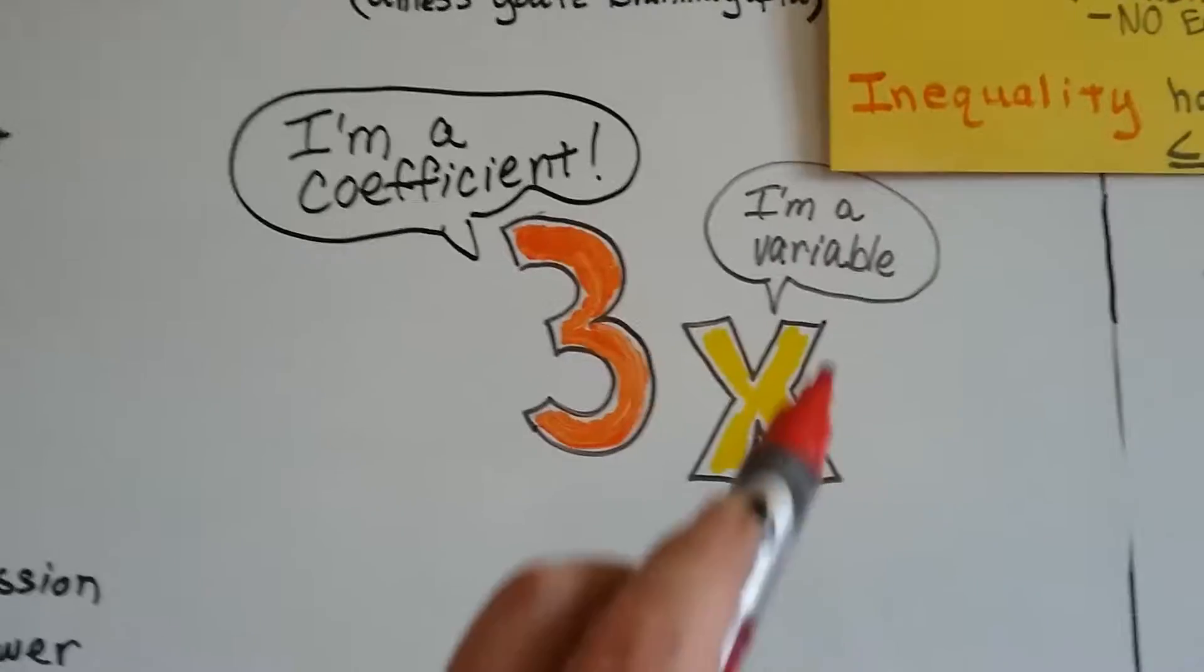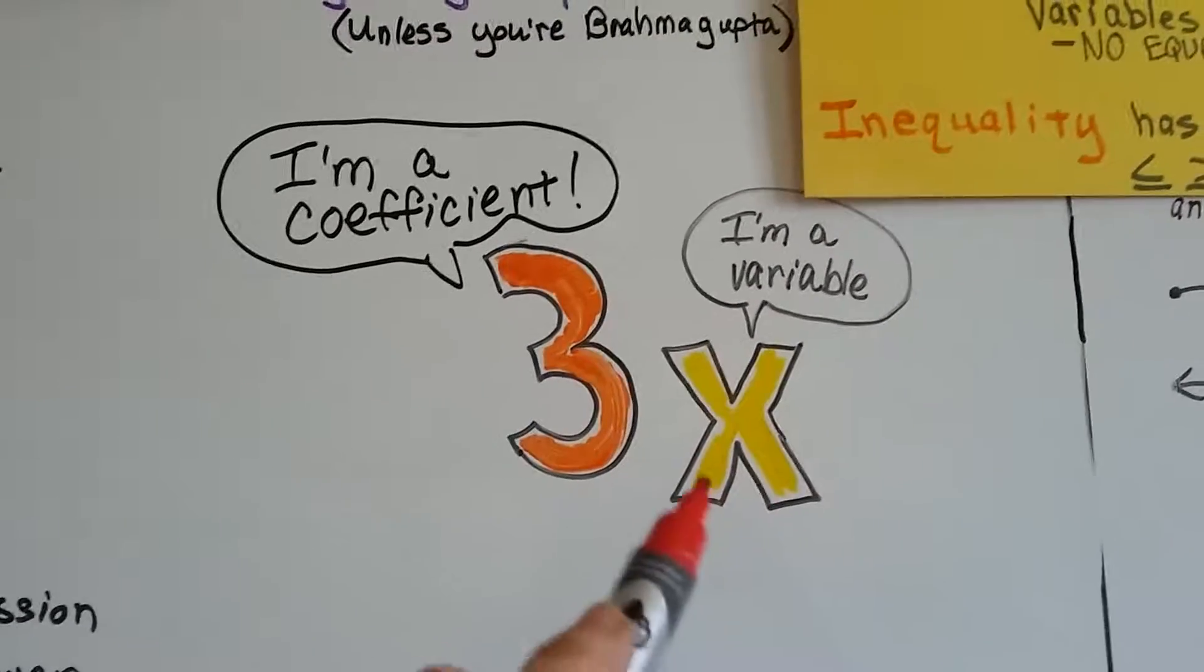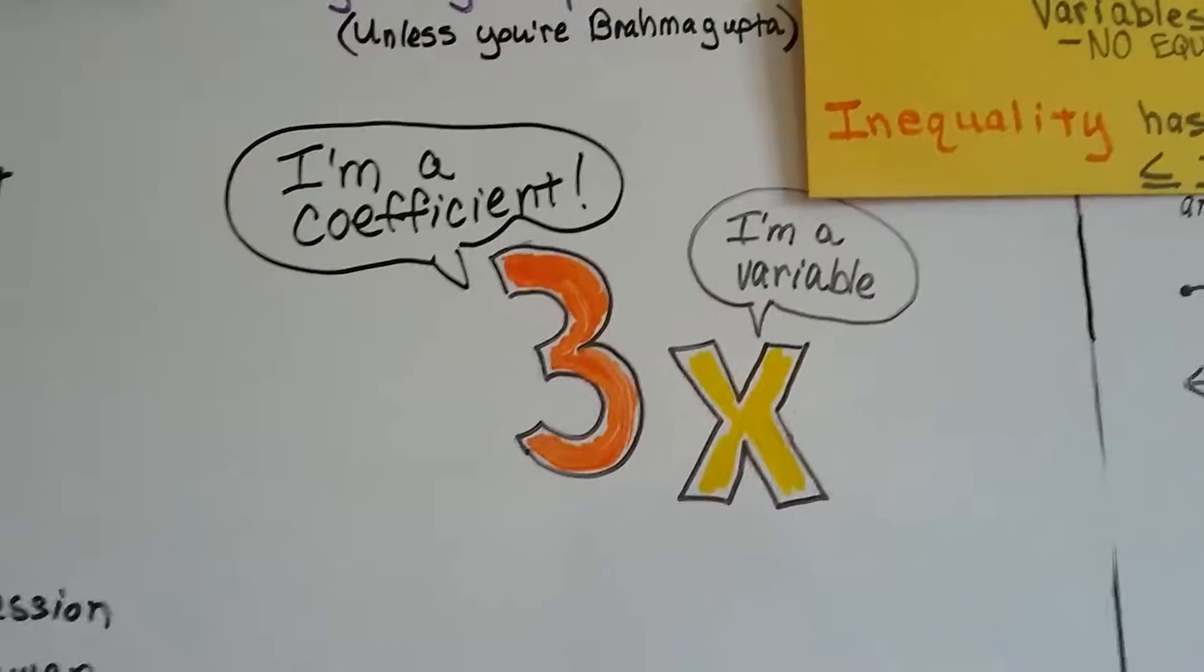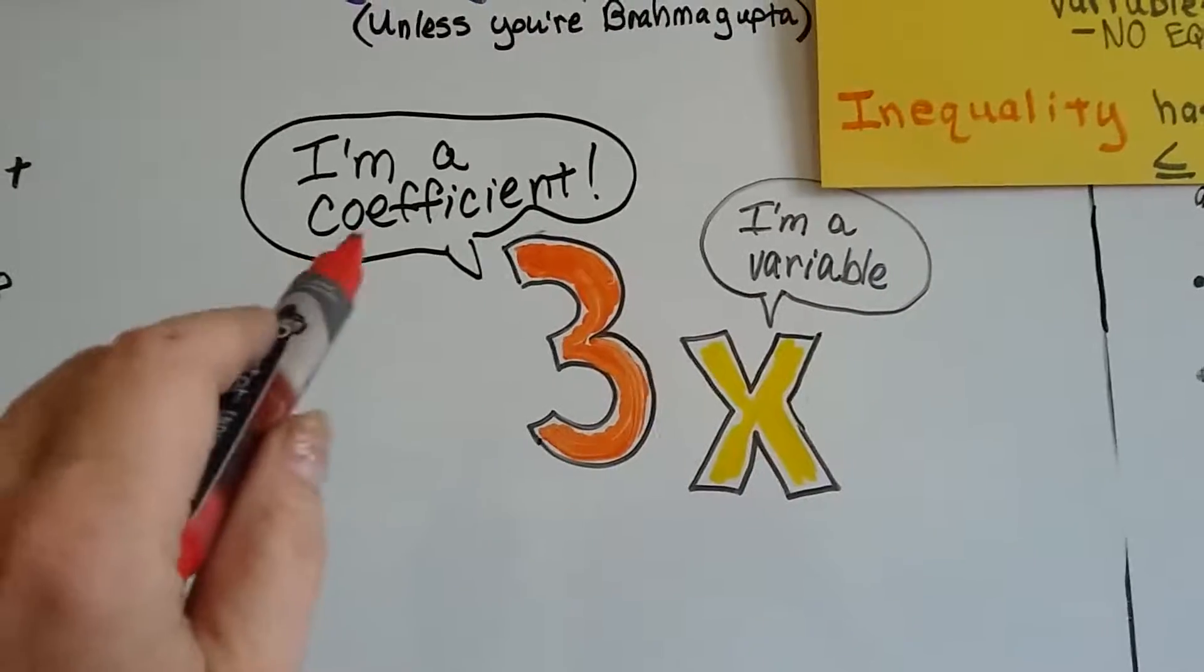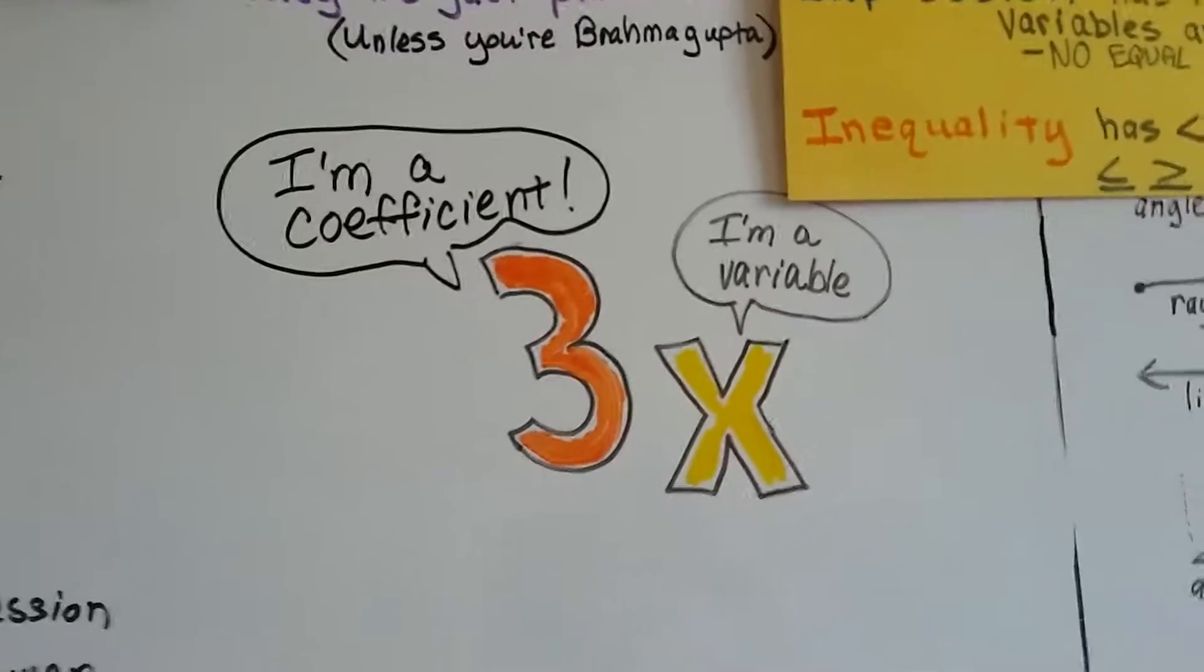But because this x is tagging along with him, or an n, or a y, or a p, or a q, or whatever the variable is, he becomes a coefficient. And co is like a co-worker - they're buddies. So now he's a coefficient because that variable is tagging along.